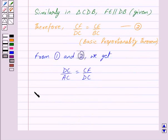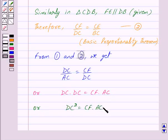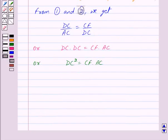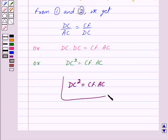We can write this as DC times DC equals CF times AC, or DC² = CF·AC. Thus, we have proved that DC² equals CF times AC. Hope you have understood the solution. Bye and take care.